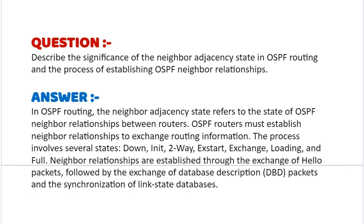OSPF routers must establish neighbor relationships to exchange routing information. The process involves several states: DOWN, INIT, 2-WAY, EXSTART, EXCHANGE, LOADING, and FULL. Neighbor relationships are established through the exchange of hello packets, followed by the exchange of database description (DBD) packets and the synchronization of link state databases.